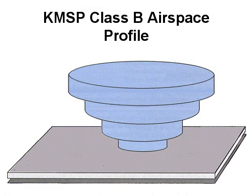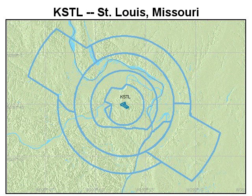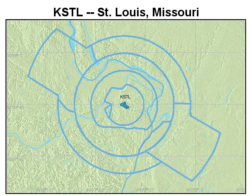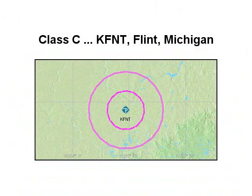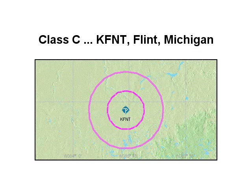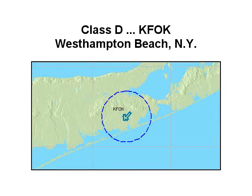Here is the inverted wedding cake profile of the KMSP Class B airspace, topping out at 10,000 feet MSL as noted on the sectional chart. Rarely is Class B airspace nice and symmetrical — take for example the Class B airspace at St. Louis, MO. Solid magenta contour lines identify Class C Charlie airspace, which surrounds airports at mid-sized cities and uniformly tops out at 4,000 feet above the surface. Dashed dark blue contour lines identify Class D Delta airspace, which uniformly tops out at 2,500 feet above the surface.